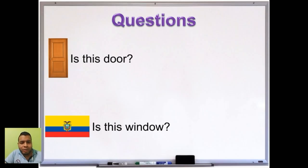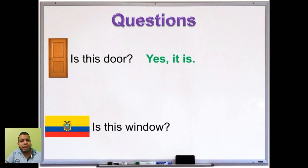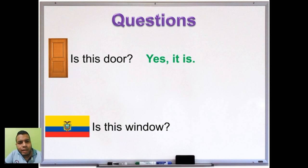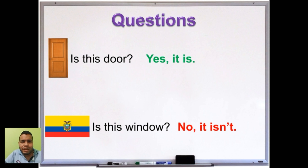Now let's make an answer to some questions. Is this a door? Yes, it is. Vean la pronunciación — no es 'yes, no'. Suena como una I y una E. Yes. Is this a window? No, it isn't. Este tipo de preguntas entonces se responde yes it is or no it isn't.